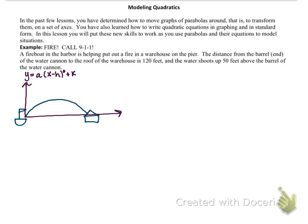From the information we know, the water cannon to the roof of the warehouse is 120 feet. So we know, if this is our origin at (0, 0), that the coordinate point where the water hits the warehouse is 120 feet away. So we'll have the coordinate point (120, 0).